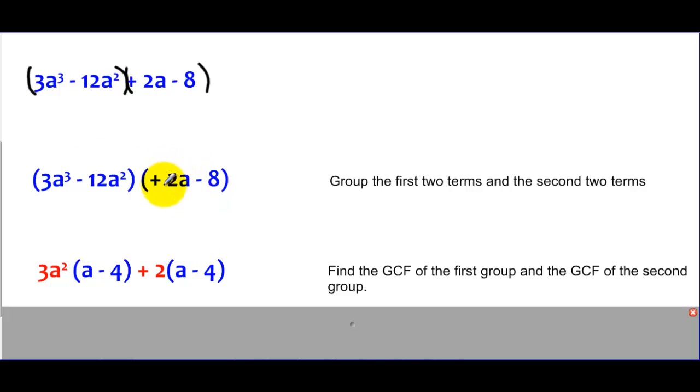Did the same thing with the second group. I said two times A gives me 2A. Two times negative four gives me negative eight. So I really just did that GCF process twice, once on the first group, once on the second group.